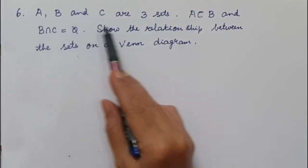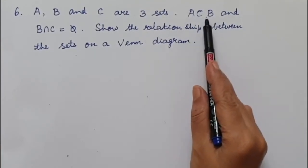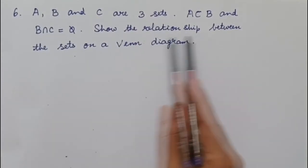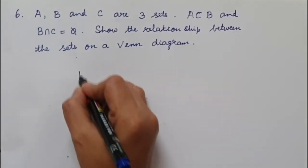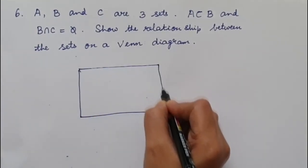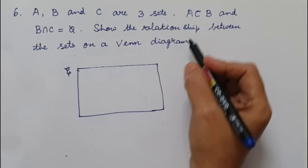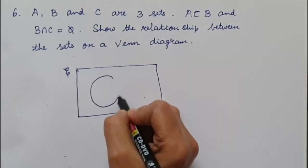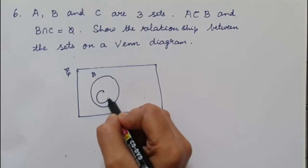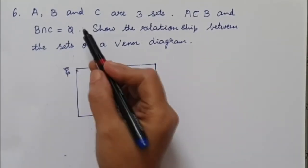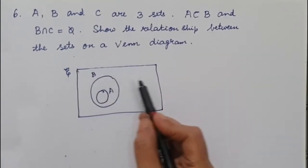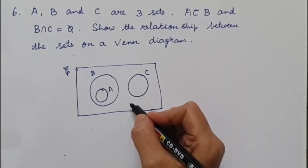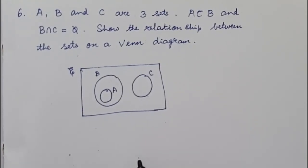The last question: A, B and C are three sets. A is a subset of B, meaning A is inside B. And B intersection C is a null set. Show the relationship between the sets on a Venn diagram. We draw a rectangular universal set, then a large circle for B with a smaller circle A inside it. Then we draw a separate circle C that does not overlap with B, since B ∩ C equals ∅ and there are no common elements. Thus we can represent sets using Venn diagrams. Thank you.